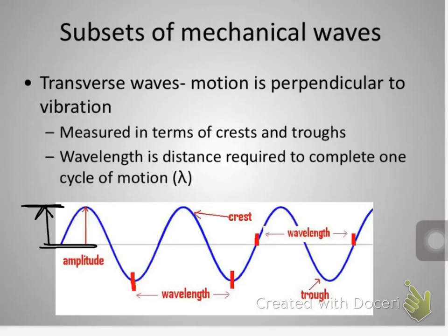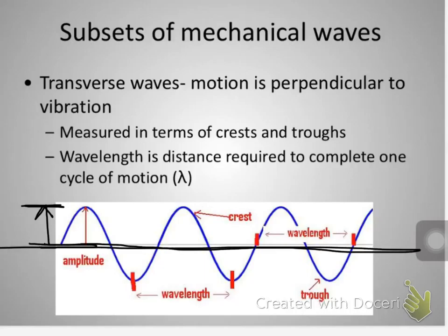On our pendulum, we said that the measurement from equilibrium out to maximum deformation was the amplitude of the motion. Here, the amplitude is the distance between equilibrium and the maximum deformation of the particle.